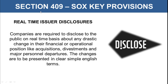Next is Section 409, which talks about real-time issuer disclosures. Many times, if there is any drastic change in the financial or operational position of a business and that is not disclosed publicly, it lacks transparency because people are not aware of what the company is going through. Thus it was required that the company disclose to the public on a real-time basis, urgently, any drastic change — which could be an acquisition, a divestment, or any major personnel departure. These are some examples. Such changes should be disclosed in simpler English language.